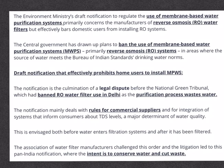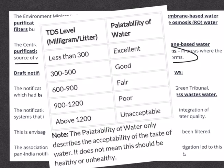This primarily concerns manufacturers of reverse osmosis water filters. The notification is the outcome of a legal dispute before the National Green Tribunal, which had banned RO water filters in Delhi due to excessive water wastage. The notification deals with rules for commercial suppliers and integration of systems that inform consumers about TDS levels, a major determinant of water quality. The center wants to ban RO systems in areas where the water source meets Bureau of Indian Standards' drinking water norms — a TDS level below 300 is considered excellent for drinking, while above 1,200 is considered unacceptable.